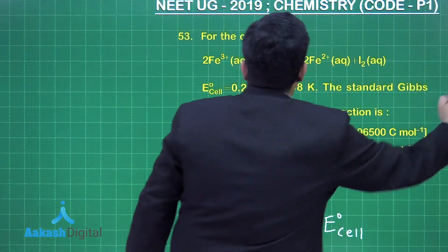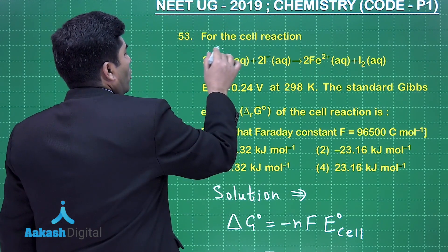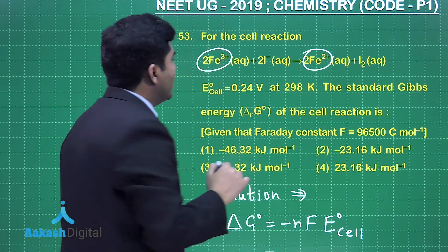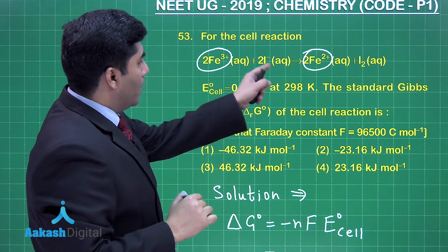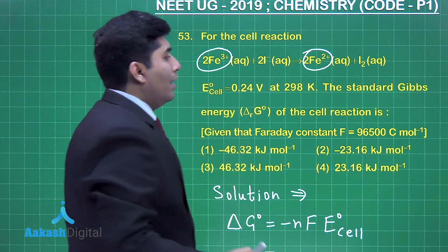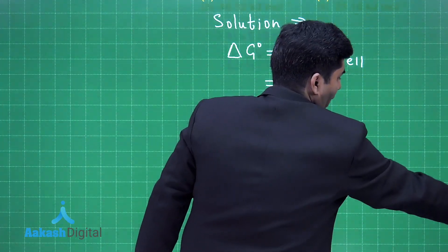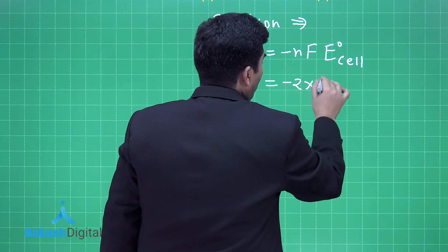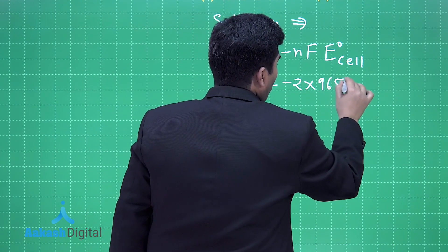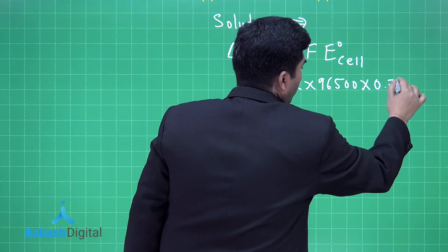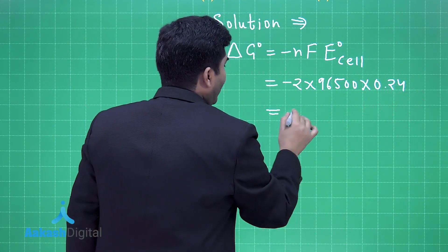So when we see the reaction, it is 2Fe³⁺ forming 2Fe²⁺, means +6 charge is becoming +4 charge. It means that the number of electrons is equal to 2. That's why the value of n is equal to 2. So, minus 2 into 96500, it is given to us, multiplied by E°cell is 0.24.